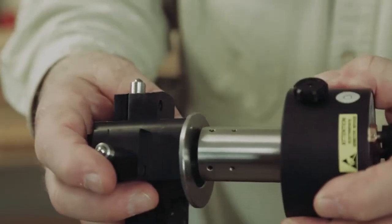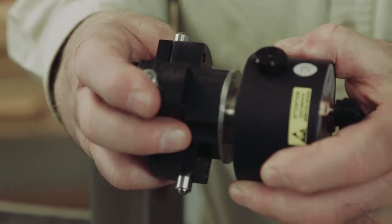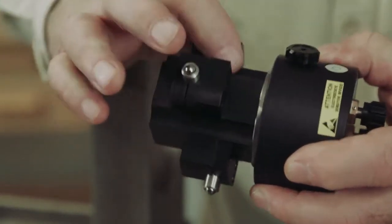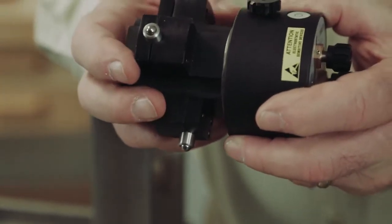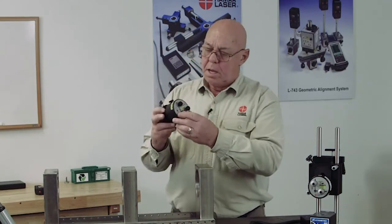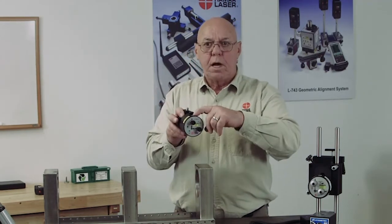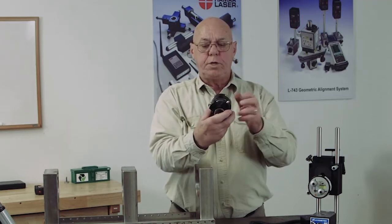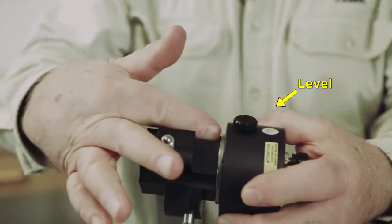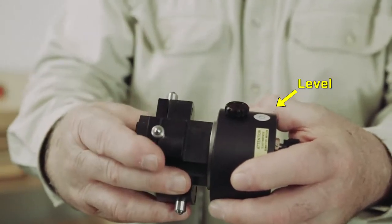So when I place this in the adapter, it's held in magnetically. When I put this in the adapter, I want this level on the top, right in line between these two legs, right between the legs that are farthest forward.